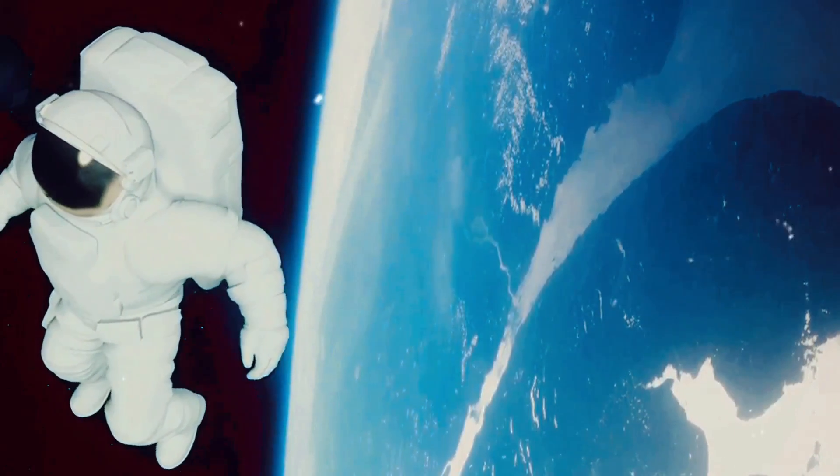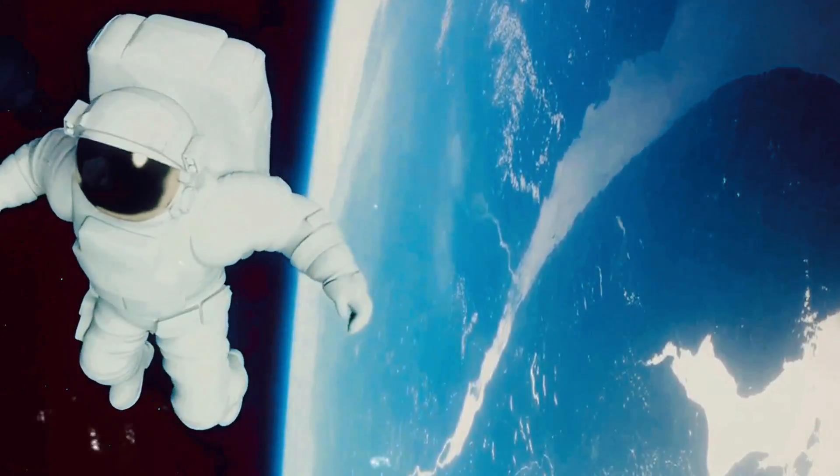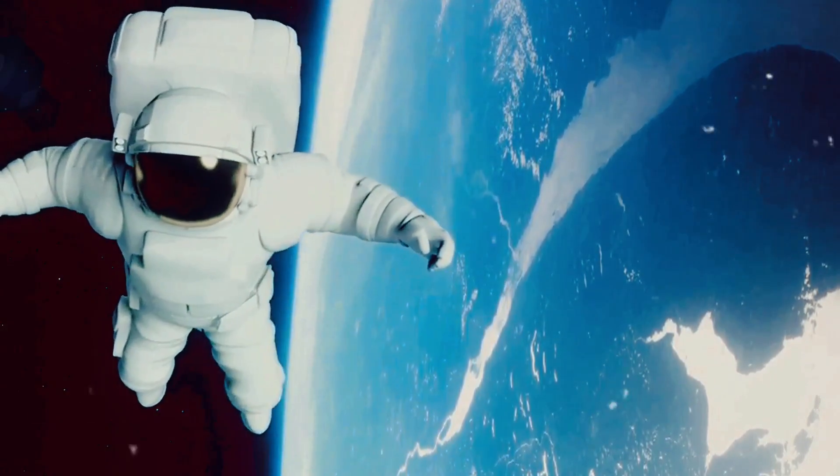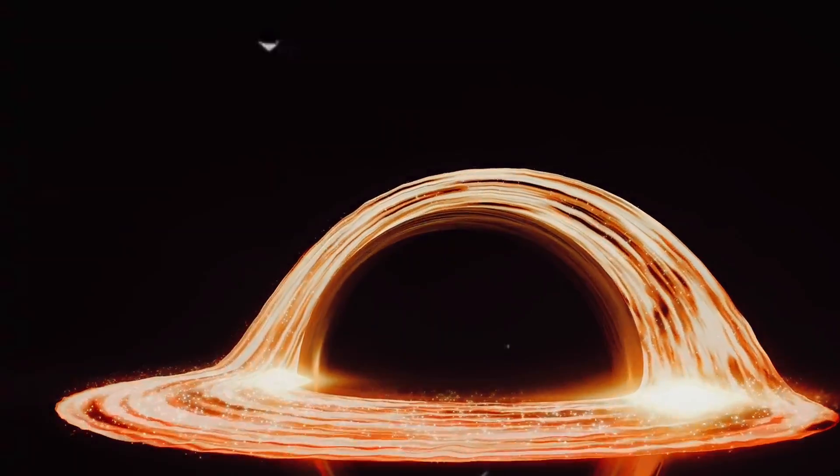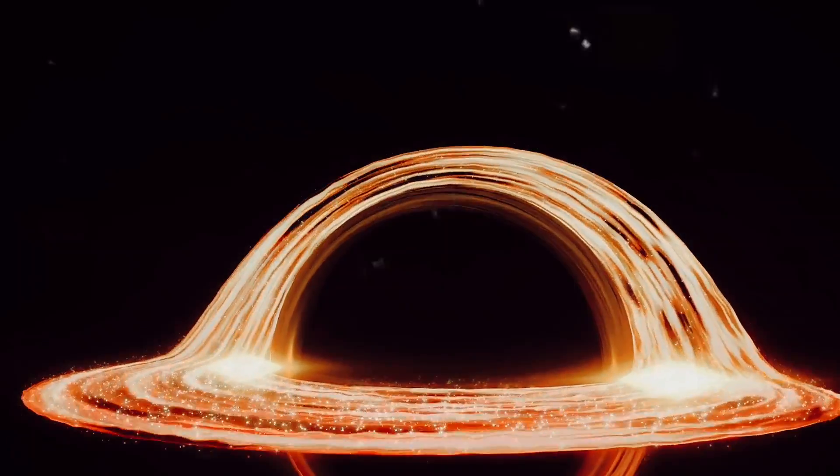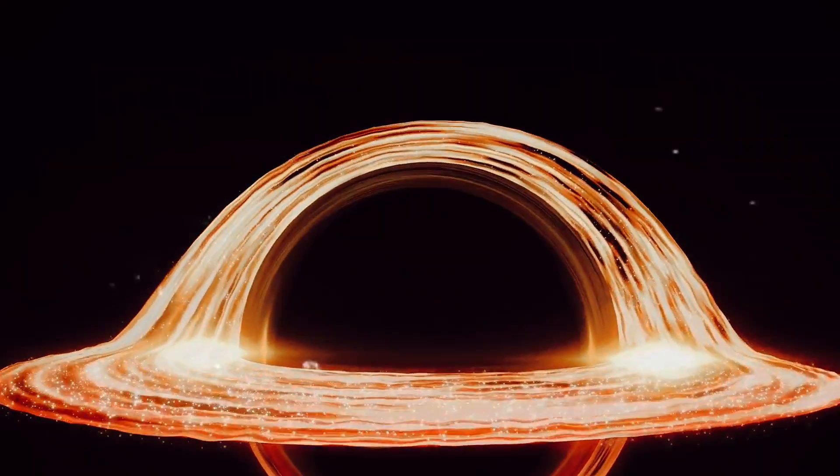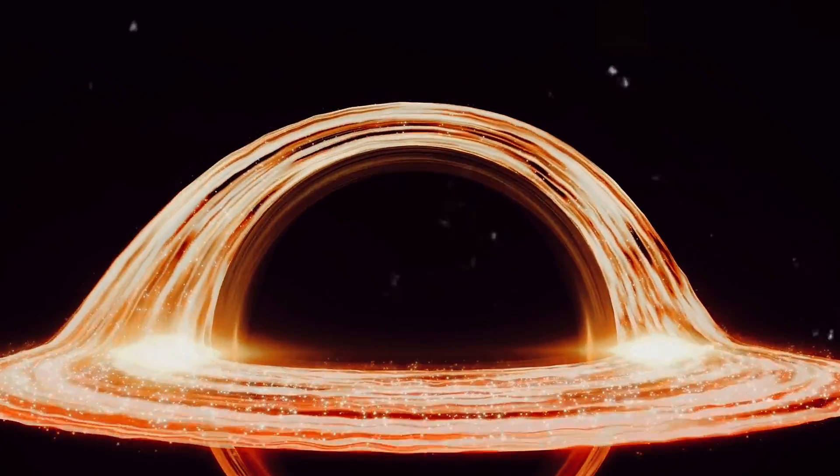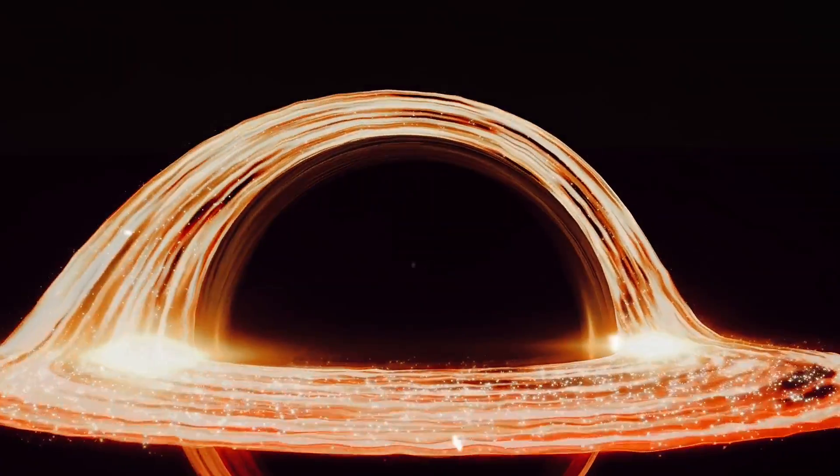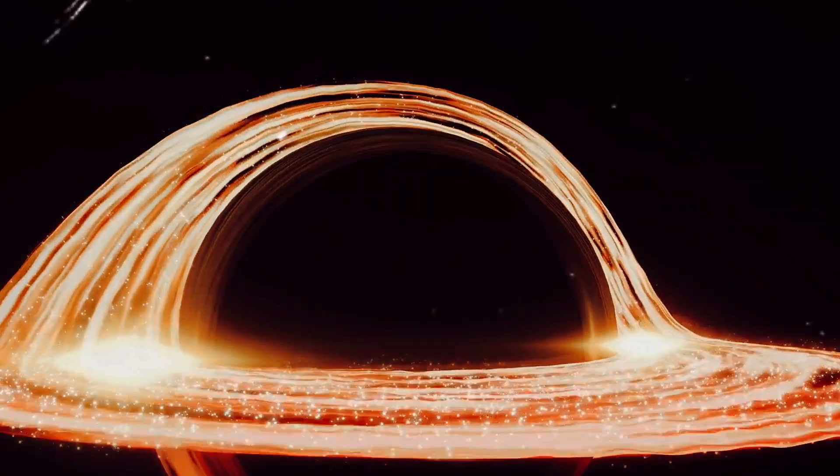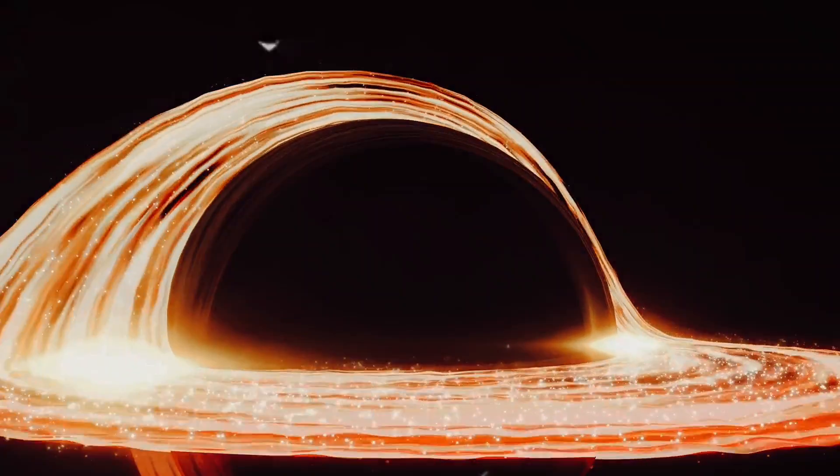The black hole, with its immense gravitational pull, acts like a celestial conductor, guiding Planet in its relentless orbit. Imagine Planet moving at an unimaginable speed, covering vast cosmic distances in a blink. The speed is not constant, though. As it approaches the black hole, it quickens only to slow down as it moves away.